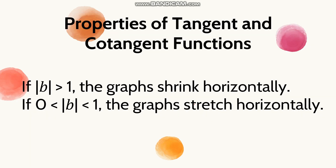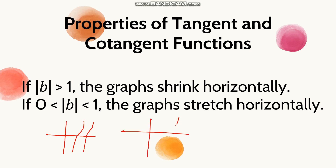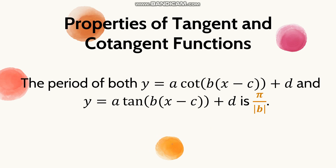We also have the period for tangent and cotangent. If |b| is greater than 1, the graphs shrink horizontally — they have a shorter period. If |b| is between 0 and 1, the graphs stretch horizontally and are wider. The formula for the period of both cotangent and tangent is pi over the absolute value of b.